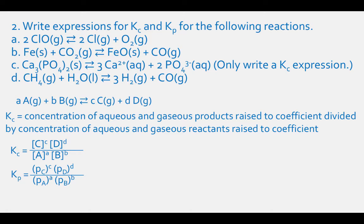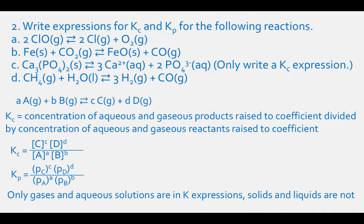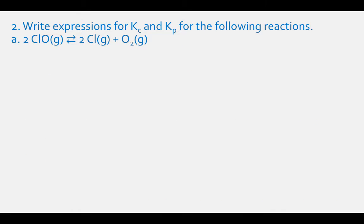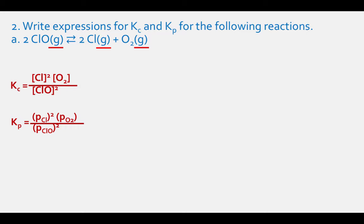Remember, only gases and aqueous solutions are in equilibrium constant expressions — pure solids and liquids are not. For letter A, we have all gases, so Kc equals the concentration of Cl₂ squared times the concentration of O₂ divided by the concentration of ClO₂ squared. The Kp expression is the partial pressure of Cl₂ squared times the partial pressure of O₂ divided by the partial pressure of ClO₂ squared.